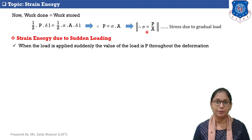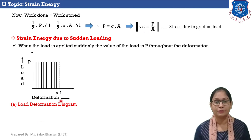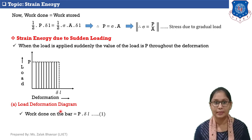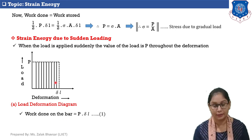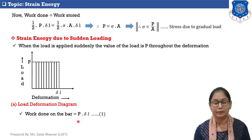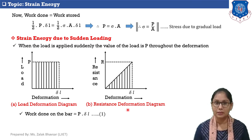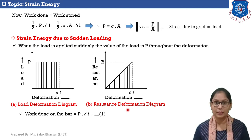Now let's discuss strain energy due to sudden loading. When load is applied suddenly, the value of load P throughout the deformation remains the same, or uniform. The load versus deformation diagram is now rectangular. The work done on the bar equals the area of this rectangle: P into delta L. This is equation number 1.